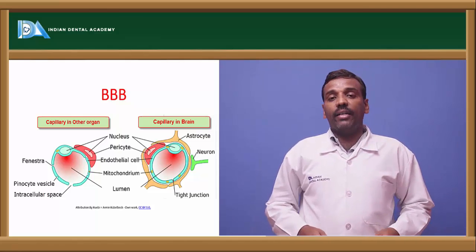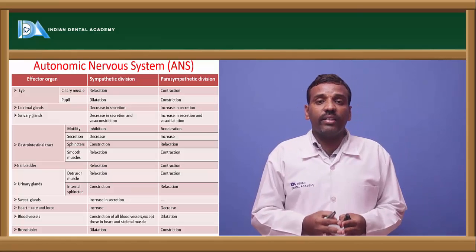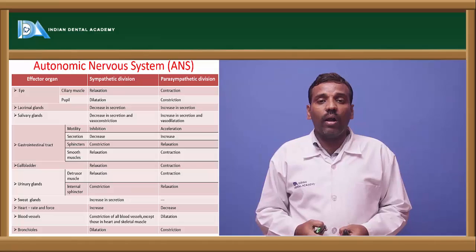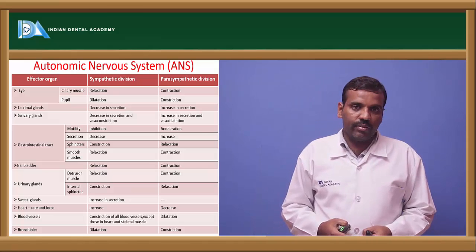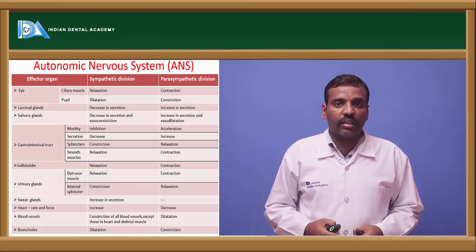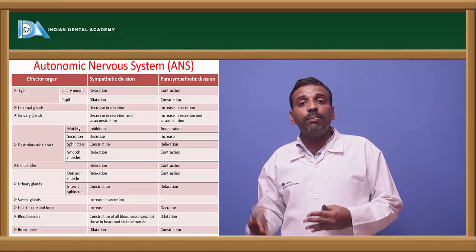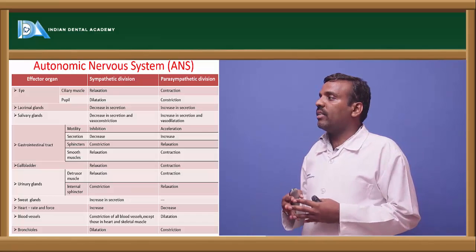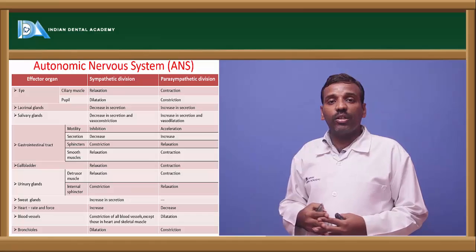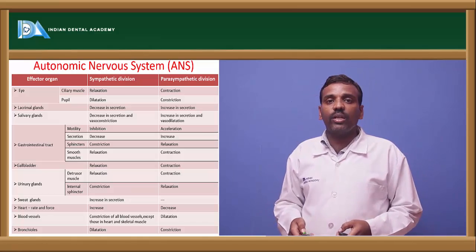The autonomic nervous system controls different types of movements, actions, chemical reactions — whether inhibition or secretion — all without conscious awareness. It operates via ganglia and is divided into sympathetic nervous system and parasympathetic nervous system. In the eye, the sympathetic nervous system causes pupil dilation and the parasympathetic nervous system causes pupil constriction.